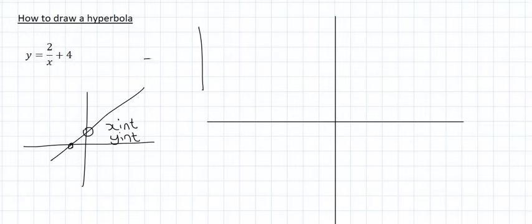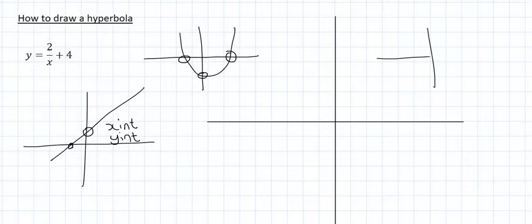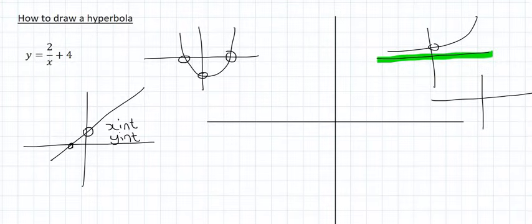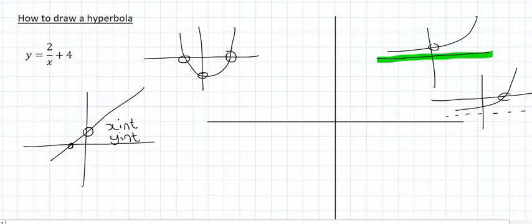With the parabola, which typically looks like this, we found the two x-intercepts and we found the y-intercept. For the exponential graph, we typically found the asymptote line and the y-intercept, and sometimes there would be an x-intercept as well. So we'd have an x-intercept, a y-intercept, and an asymptote.